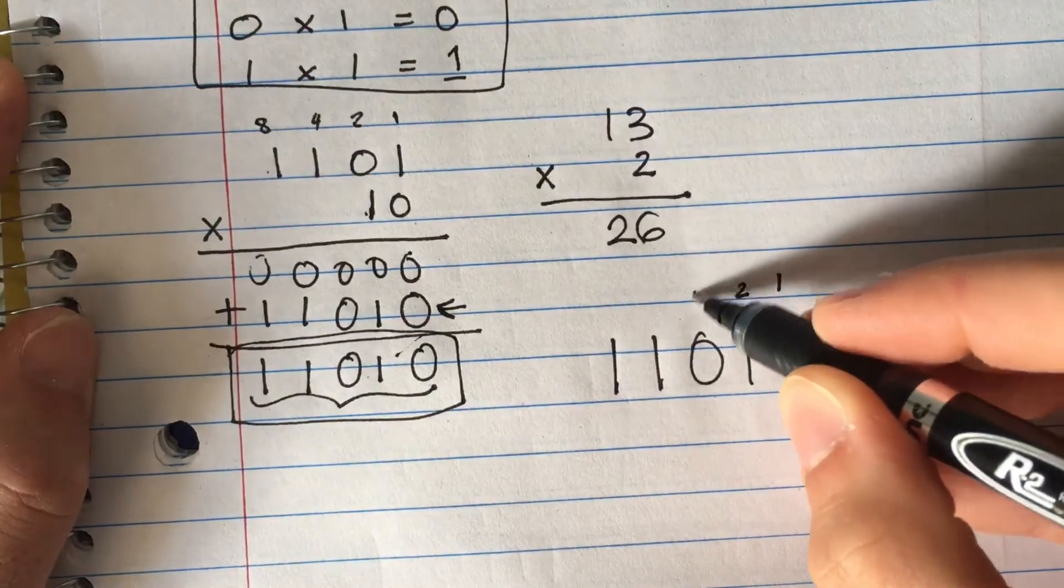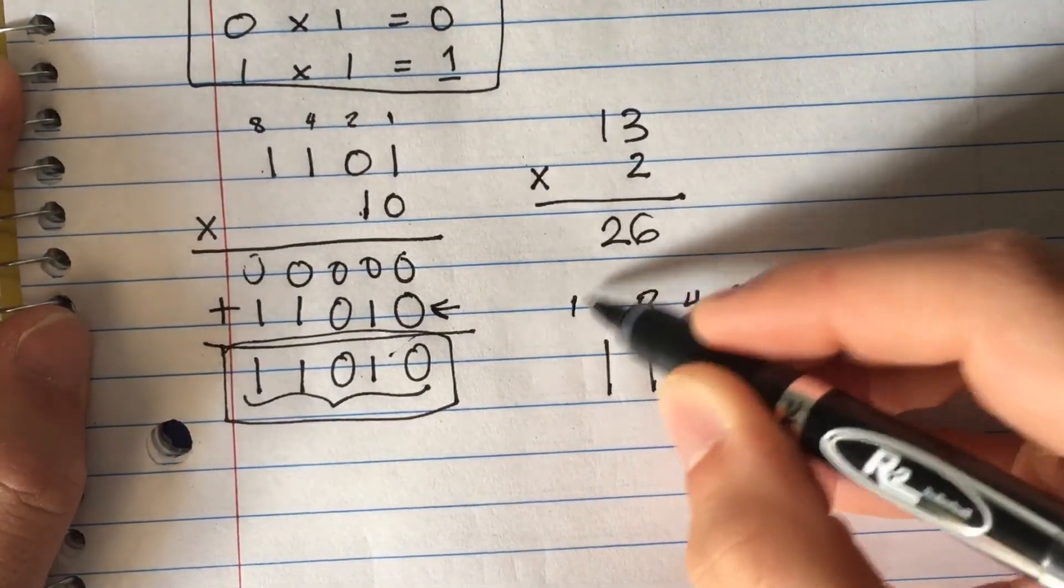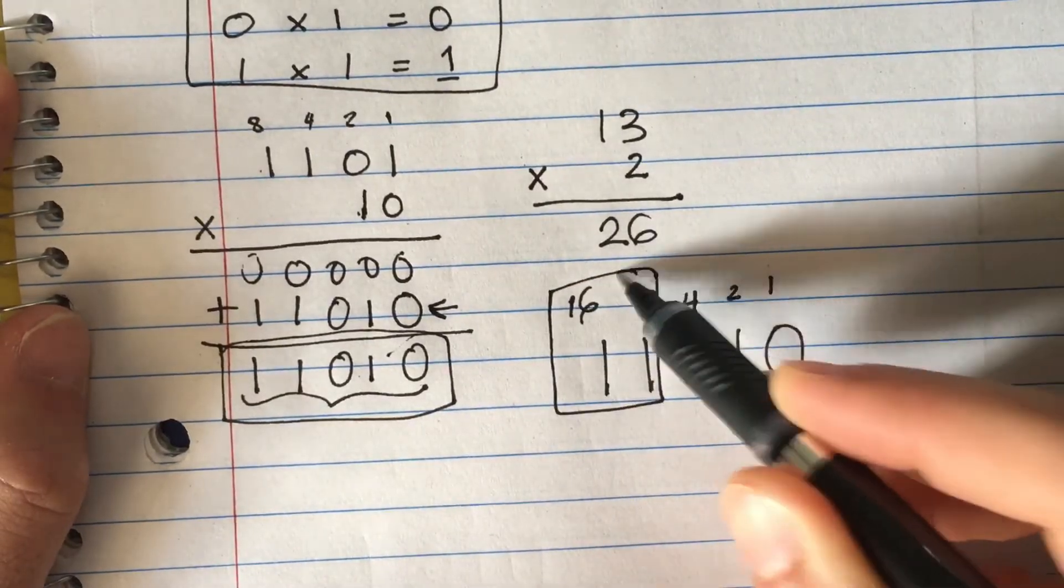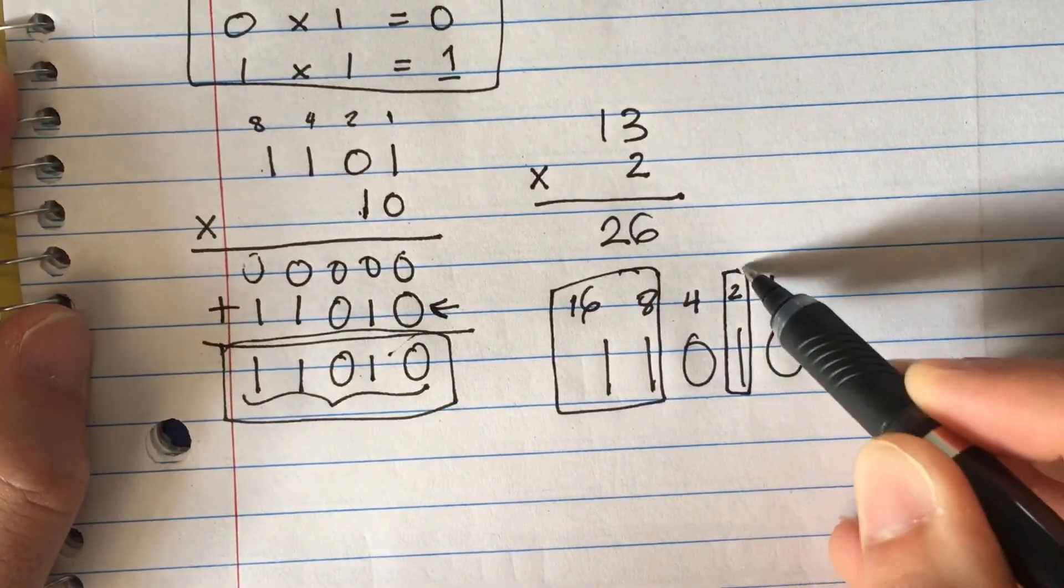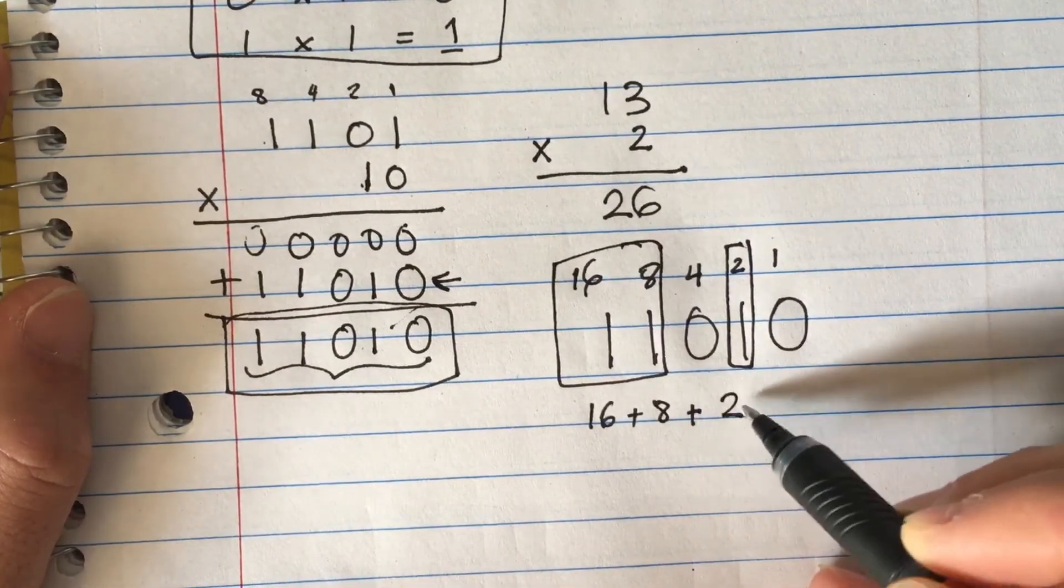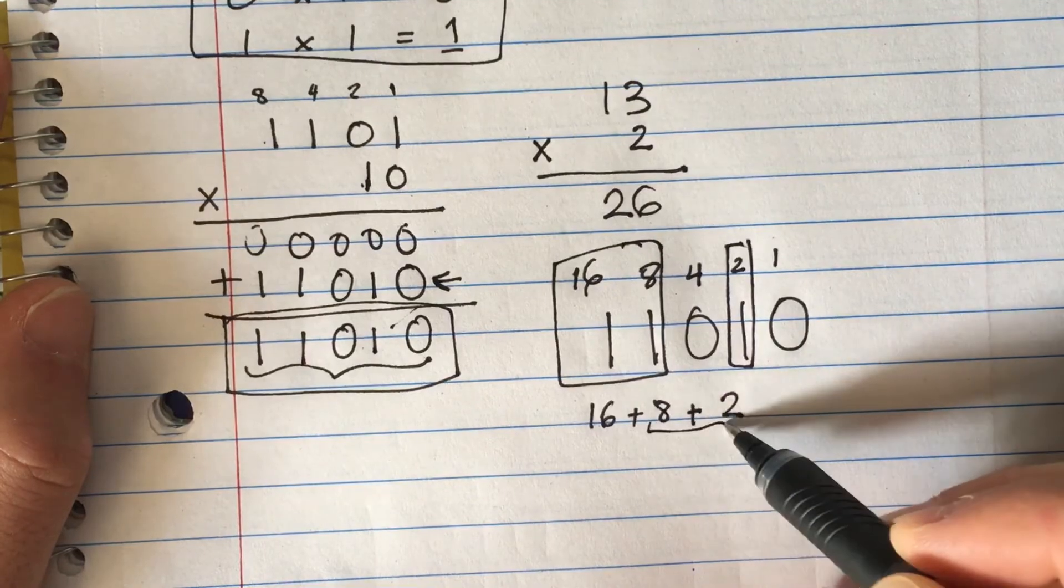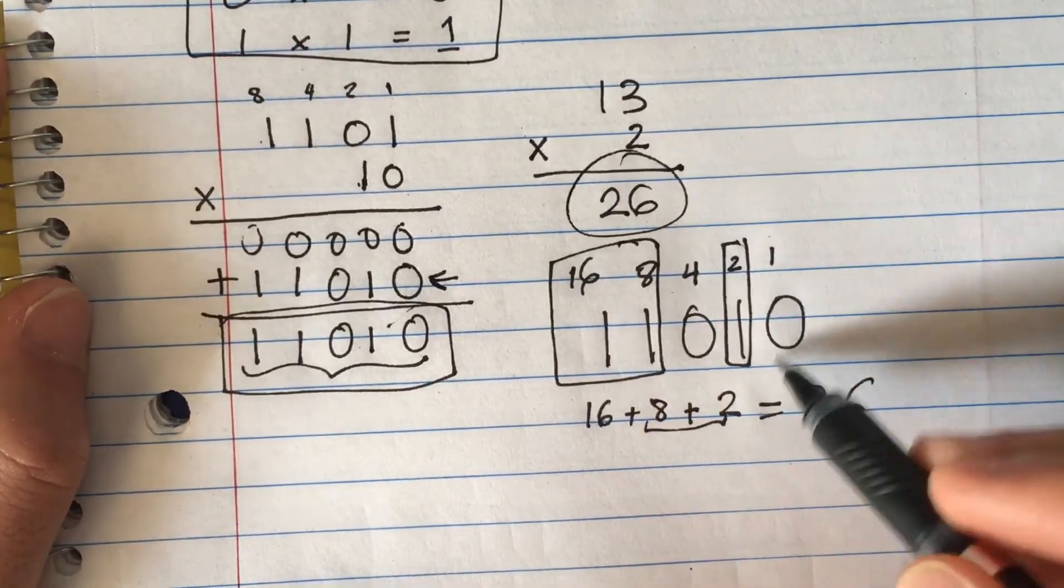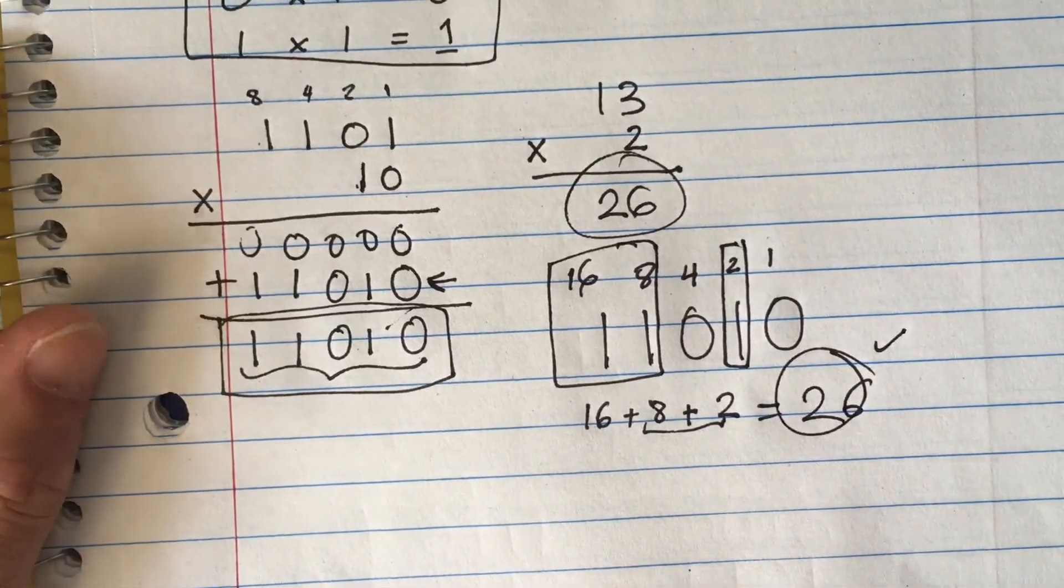We're going to add the numbers that have a 1: 16 plus 8 plus 2. That would be 16 plus 10, which equals 26. And that is the correct number.